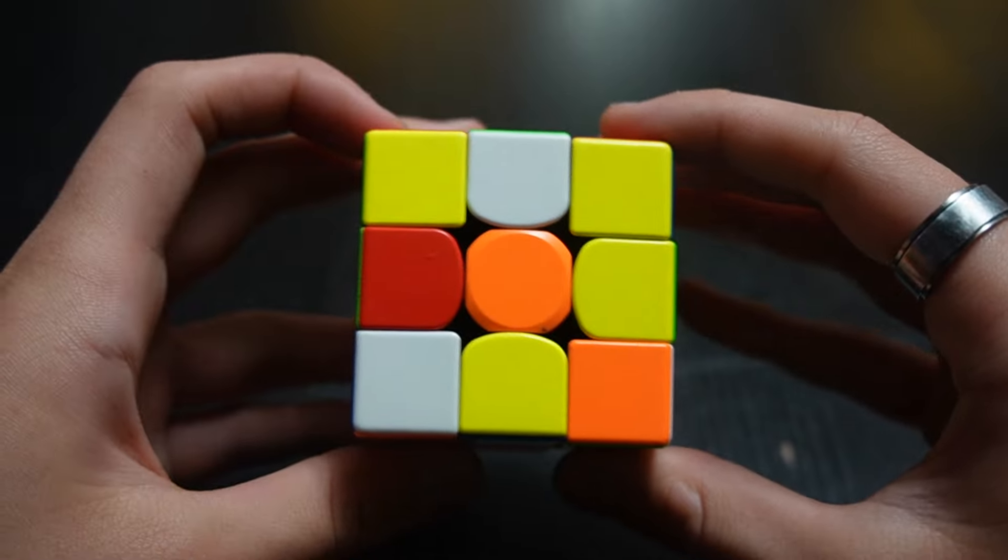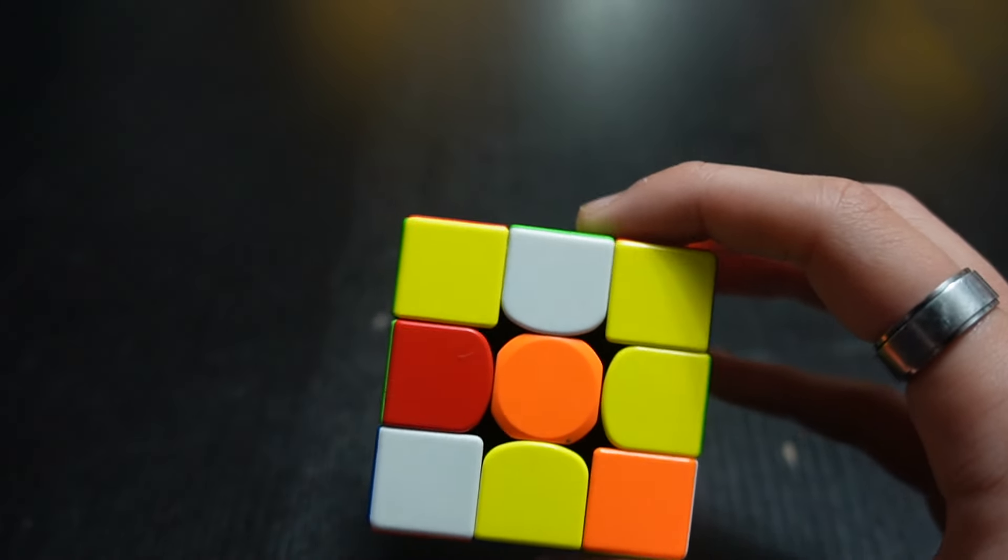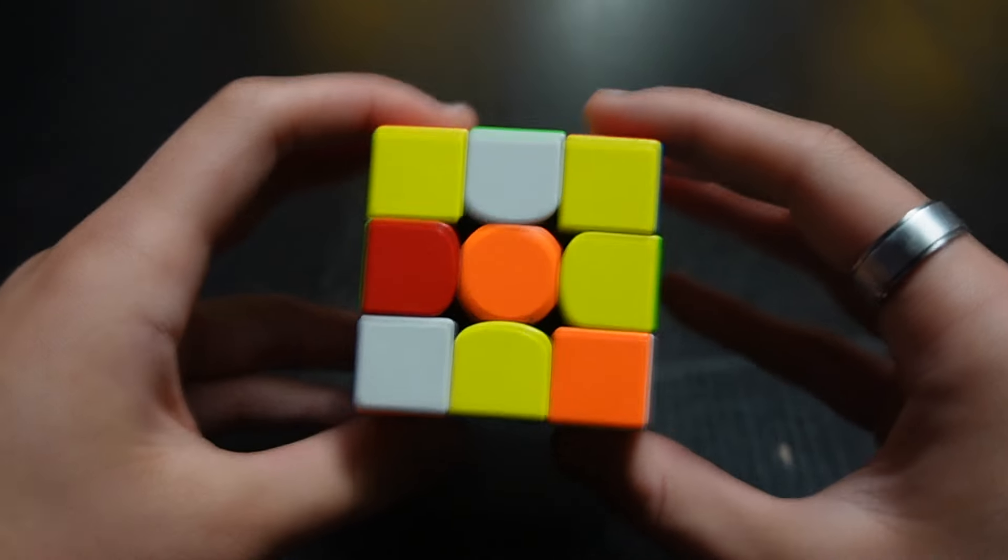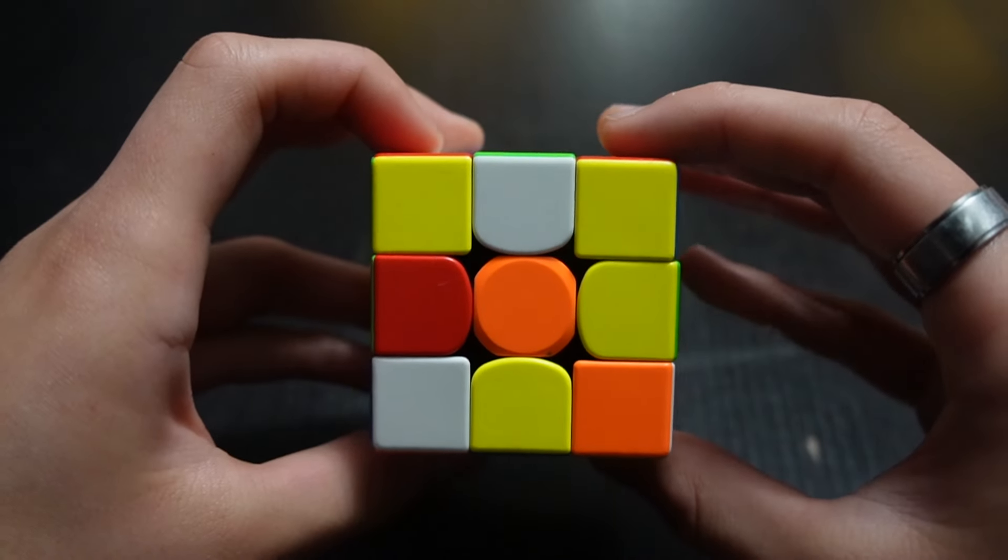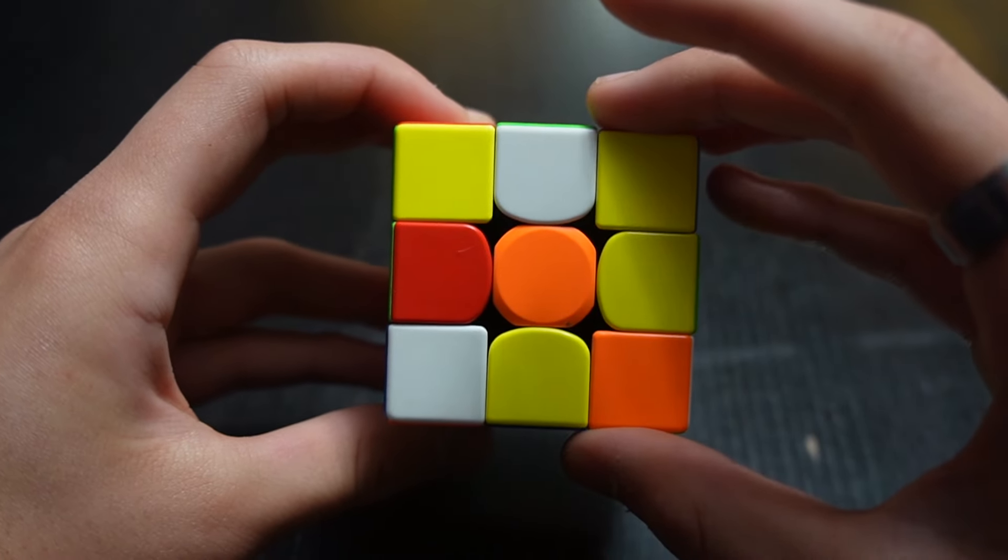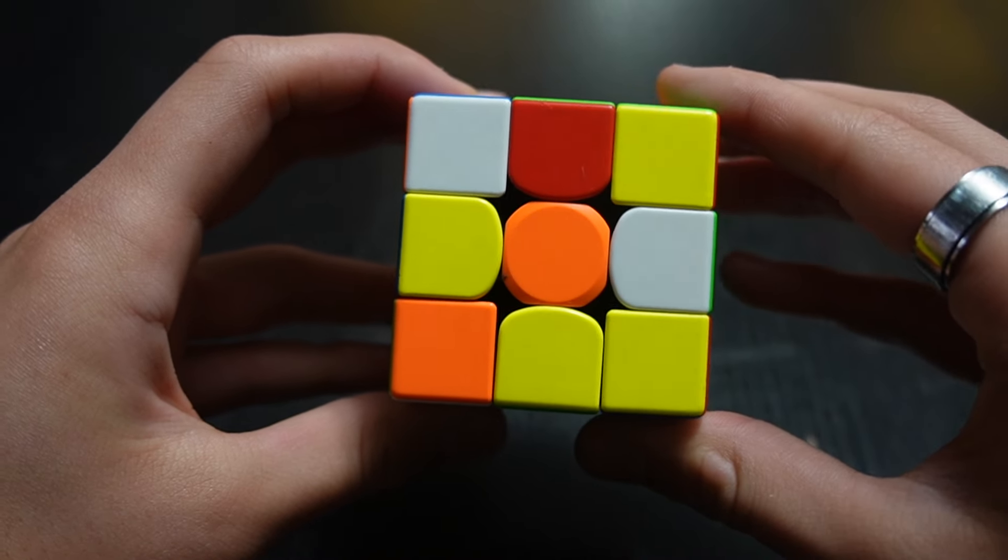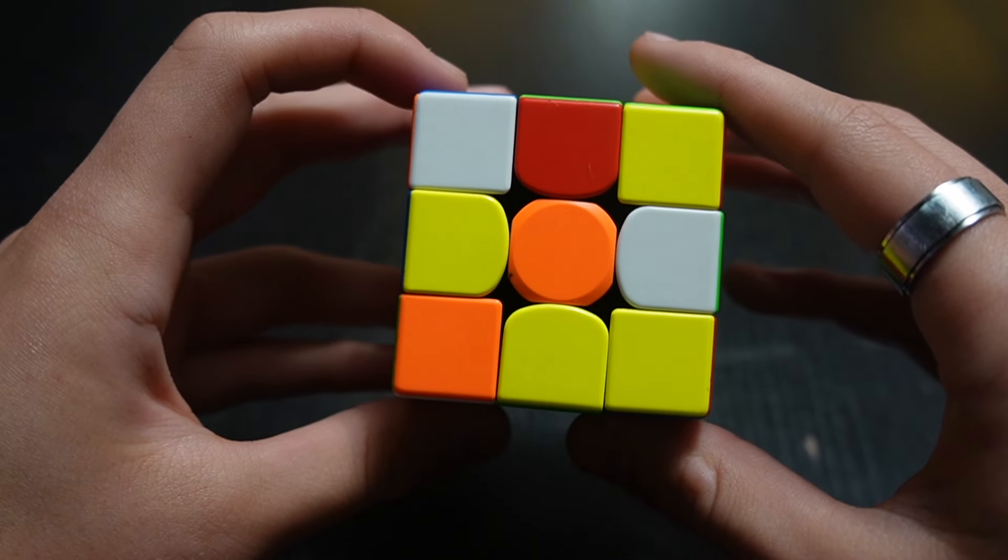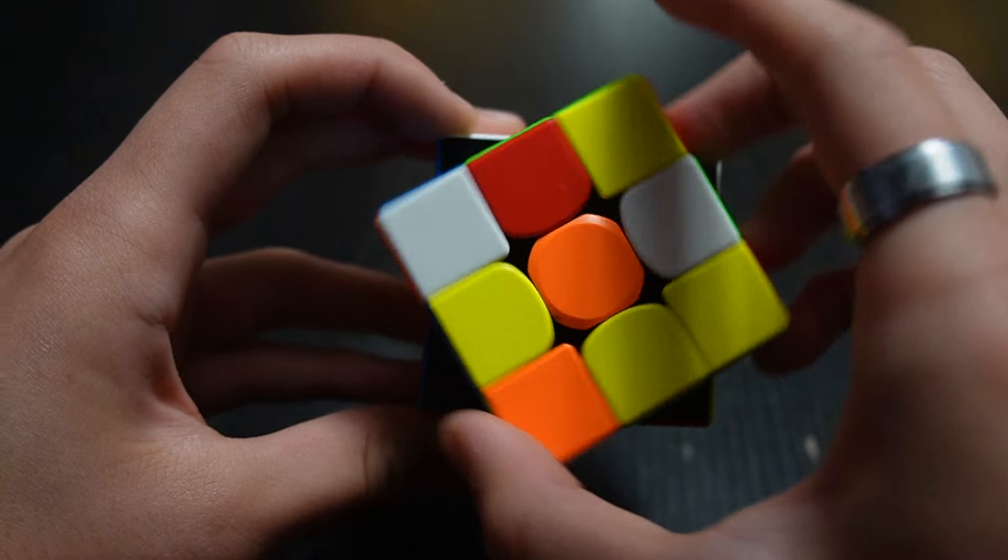Another example is the front layer, which is also a layer you'll be turning in this example solve video. So if I said F, you'd turn the front layer like a clock, like this, clockwise. And if I said F prime, you would simply turn it the other way, like this.